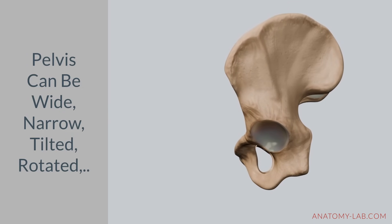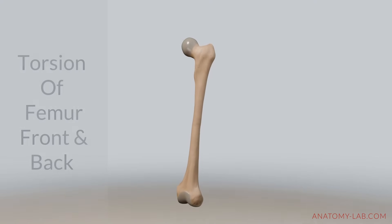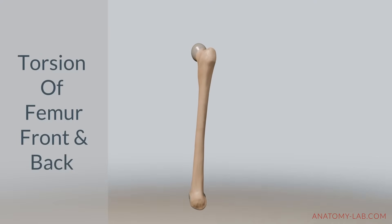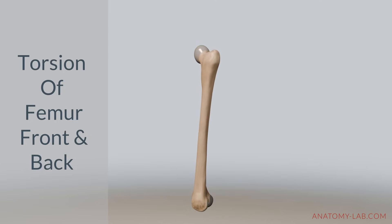Or let's look at the femur, which can also vary widely in its configuration. For example, the length of the femoral neck and the angle at which it connects to the femur can differ greatly. Additionally, something often overlooked is the amount of torsion within the femur itself, which can cause the femoral neck to be twisted either forwards or backwards relative to the pelvis.